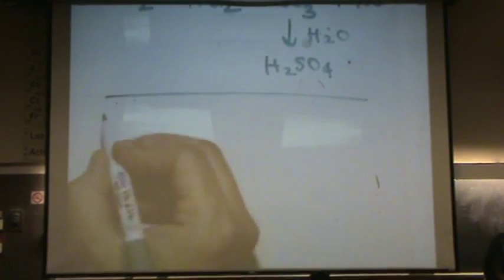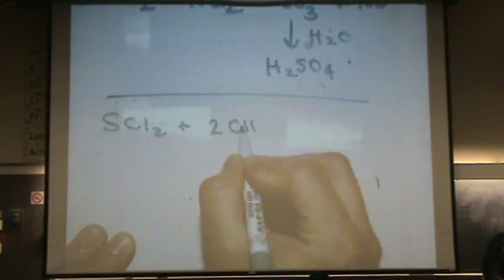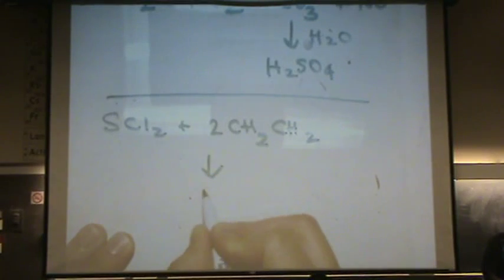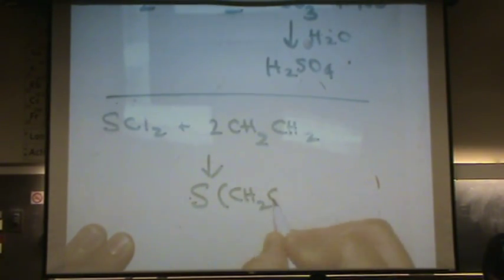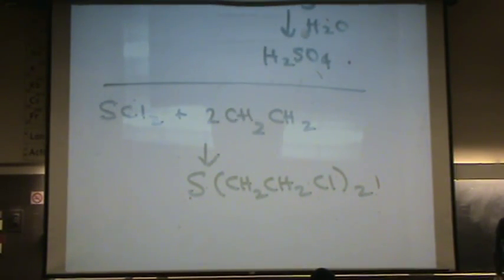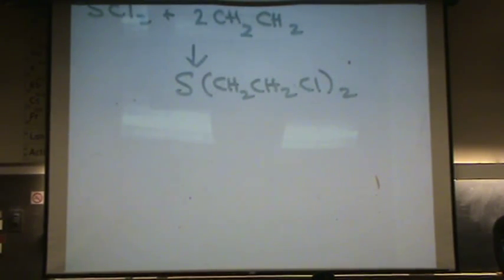Other applications of sulfur. SCl2 plus 2 ethylene. No, this is a 2. CH2CH2 forms SCH2CH2Cl2. Anybody know what that is? That's mustard gas. Mustard gas. That was used in World War I. If you use this gas like chemical warfare, it'll start causing you to blister. Then you'll bleed. Then you'll go blind. And after about a month, you'll be dead. So watch out for that. Don't eat it. Don't put it on your hot dog.